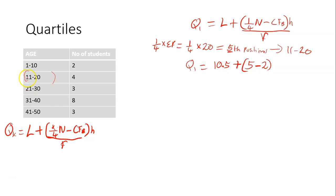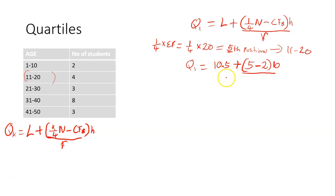When you check 21 minus 11, you still get 10. So that 10 is the height, width, or interval. We substitute 10 here. Divided by — this F means the frequency of the first quartile class. So this is the class; what's the frequency of that class? 4. So we substitute 4 here.